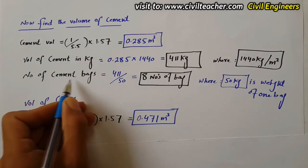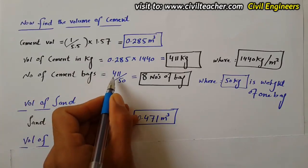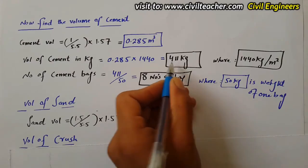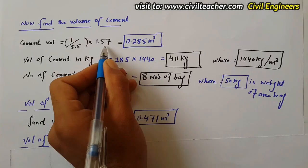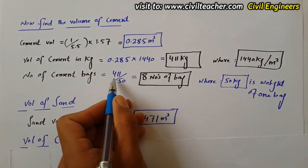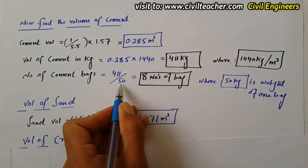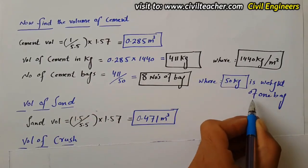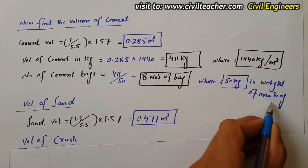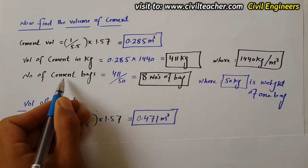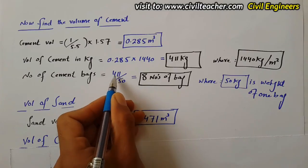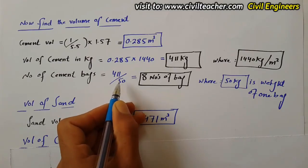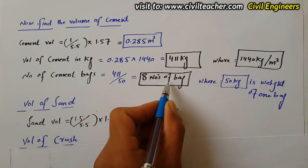Now find the number of cement bags required. We have 411 kg of cement. Dividing by 50 — since one cement bag weighs 50 kg — gives us approximately 8 bags. So 8 cement bags are required for 1.57 cubic meters of M20 concrete.